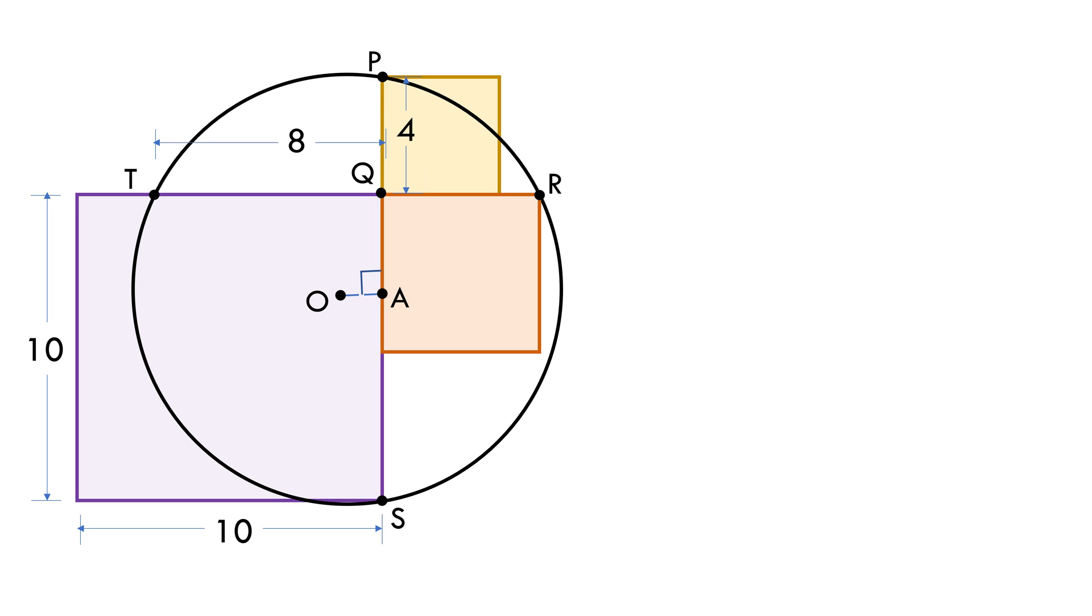Now PQ is 4 units. Therefore QA equals 7 minus 4 equals 3 units.